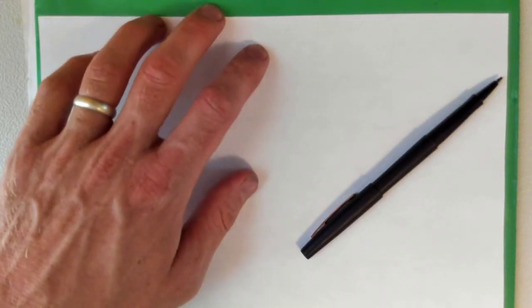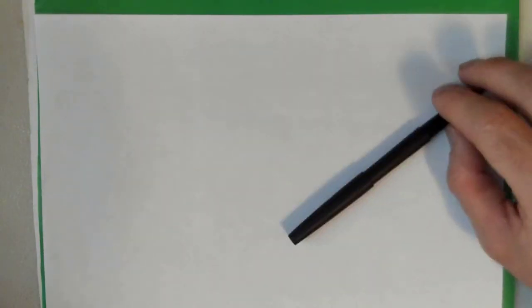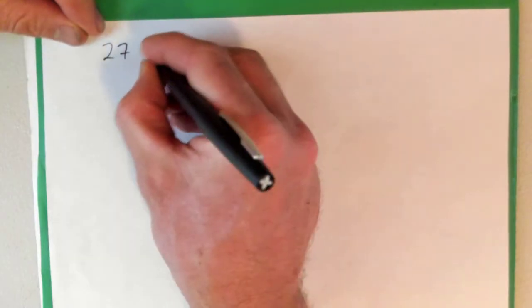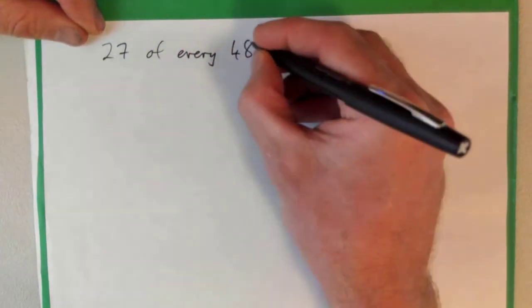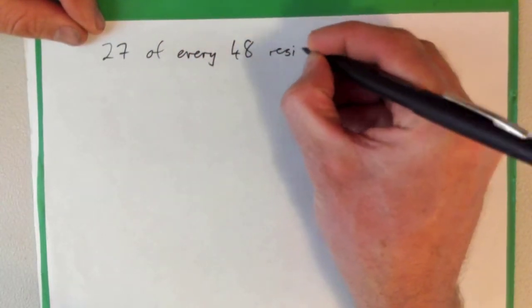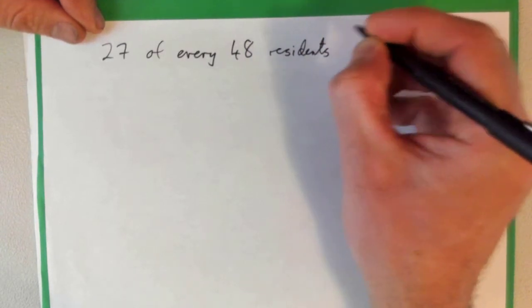All right, so we've got 27 of every 48 residents of a small town are male. What fraction of the population is male? So it's 27 of every 48 residents, and just as a minor point, that means 27 out of every 48.